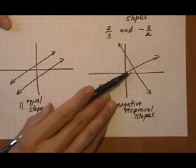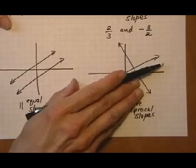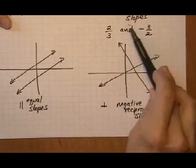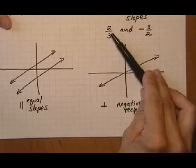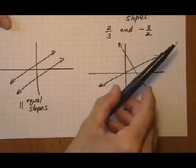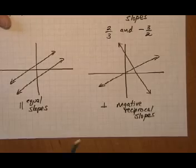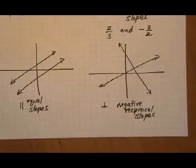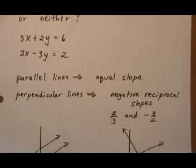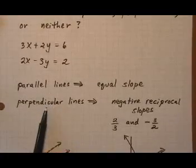So if this slope was kind of shallow and positive, this one's going to be steep and negative. The reciprocal means shallow goes to steep or steep would turn into shallow, and then positive goes to negative, takes care of the change of sign. So that is what we want to look for when we're trying to decide if we have parallel or perpendicular.